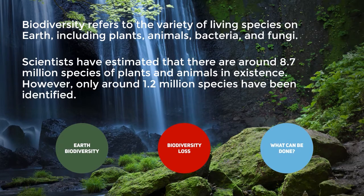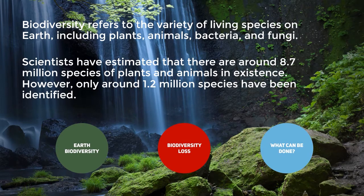Scientists have estimated that there are around 8.7 million species of plants and animals in existence. However, only around 1.2 million species have been identified. In this video we're going to discuss Earth's biodiversity, the loss of biodiversity, and what can be done.